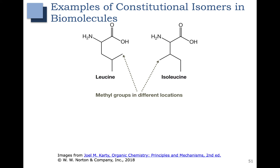Let's look at some examples of constitutional isomers in biomolecules. For example, leucine, an amino acid, is a constitutional isomer of isoleucine. They have the same molecular formula, and essentially the only difference is this methyl group is moved over here.